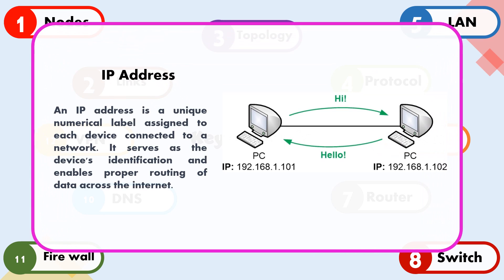An IP address is a unique numerical label assigned to each device connected to a network. It serves as the device's identification and enables proper routing of data across the internet.